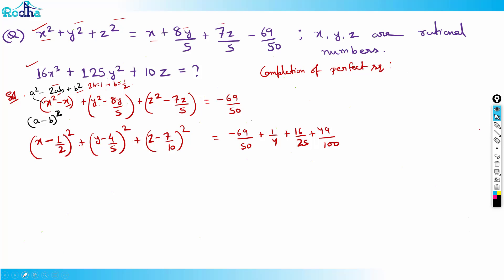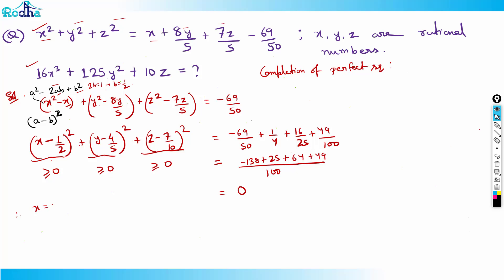Now we have three perfect squares on the left. Solving the right side, taking LCM = 100: −138 + 25 + 64 + 49 = 0. The question is beautifully designed so the sum equals 0. Since all perfect squares are ≥ 0 and their sum is 0, each must be 0. So x − 1/2 = 0 → x = 1/2; y − 4/5 = 0 → y = 4/5; z − 7/10 = 0 → z = 7/10.